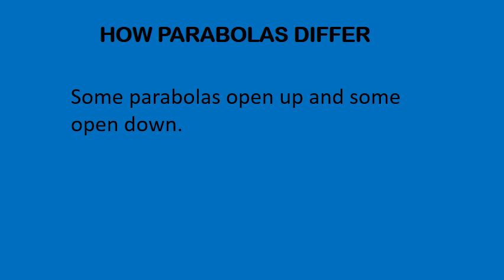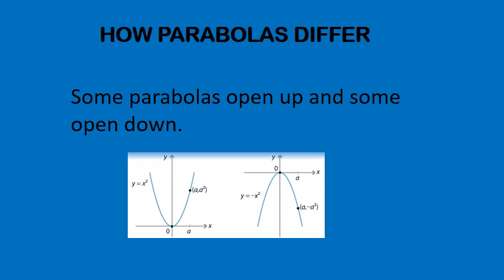So let's look at a couple of ways that parabolas can be different. The first way is they can open up or they can open down. Parabolas that open up have positive values in front of the x squared term, like that would be considered 1, 1x squared. And parabolas that open in the downward direction have a negative value in front of the x squared term.